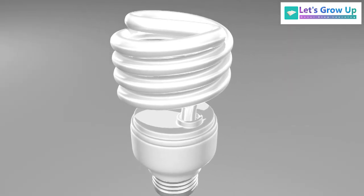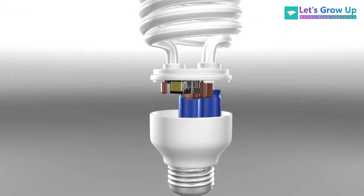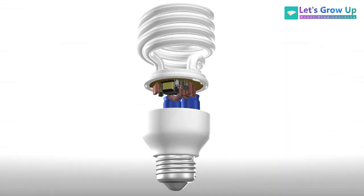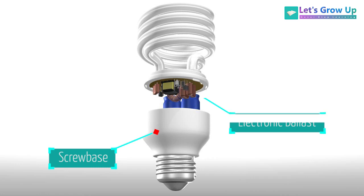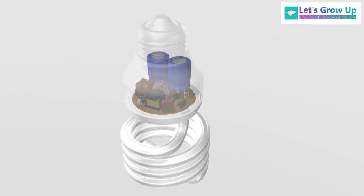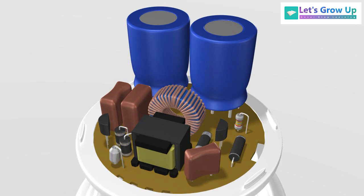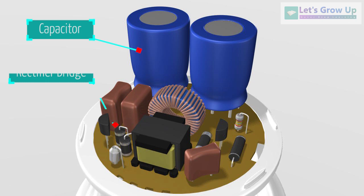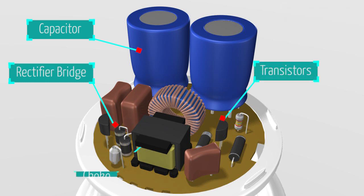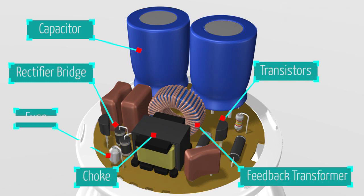It consists of three major parts: screw base or housing, electronic ballast, and spiral lamp. At the ballast there are some small components: capacitor, rectifier bridge, transistors, choke, feedback transformer, and fuse.